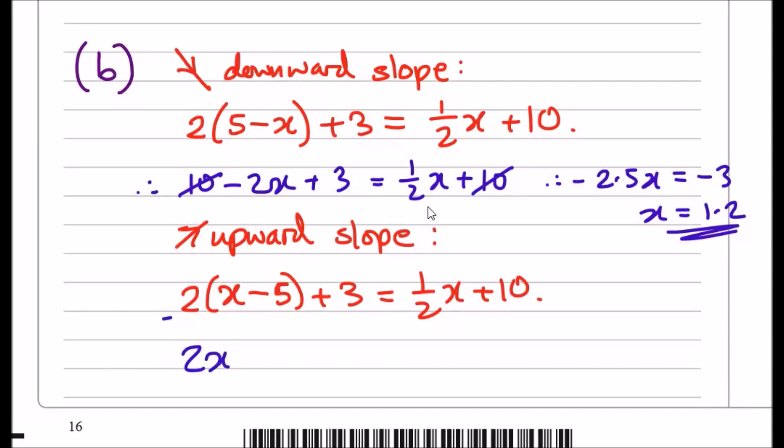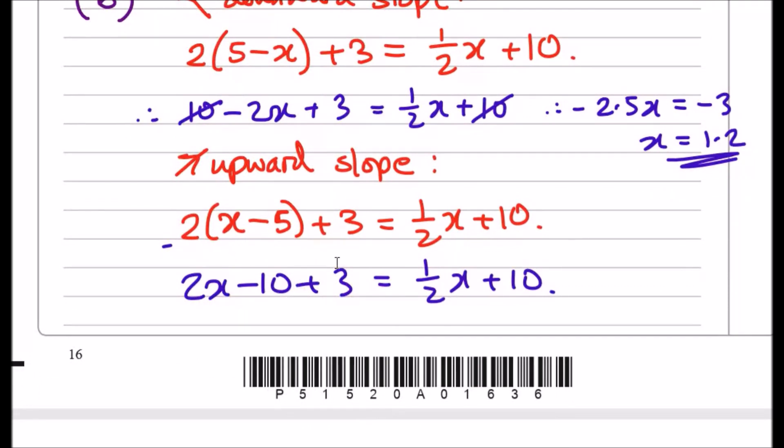And just repeat the same for the second. Expand the bracket, you get 2x minus 10 plus 3 equals half x plus 10. And then collecting, move all the x to the left and the numbers to the right. So in other words, add 10 across, minus 3, and subtract half x. You should get 1.5x here. You should get add 10 which is 20, subtract 3, and you get 17. This means x equals when you divide by 1.5, 17 divided by 1.5 gave me 34 over 3. And yeah, this is the same as 11.3 recurring.